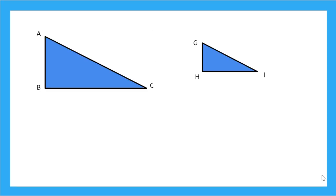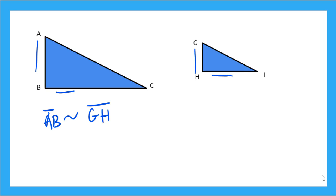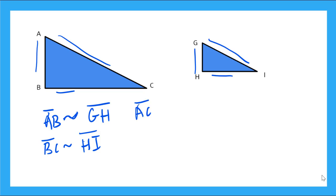So here on my two similar triangles, let's write the corresponding sides. I see that AB, the base of my triangle here, will be corresponding to GH. So I can write line segment AB is corresponding, but not congruent, to line segment GH. Line segment BC is corresponding to line segment HI — I'm using my similar symbol here, not my congruent, because they're not the same length. And then line segment AC is corresponding and similar to GI.